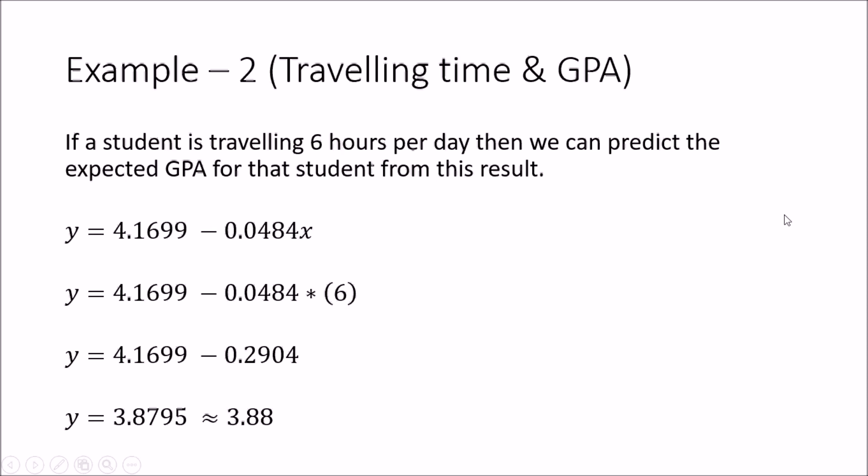Finally, I should tell you about dependent and independent variables in a regression equation. In correlation it does not matter which variable you take as X or Y, but it is important in regression. You have to identify the independent and dependent variables. Looking at the first example — rain and harvest — rain is clearly the independent variable because we cannot control it. Based on the rain value we predict the harvest, but we cannot predict rain based on harvest.